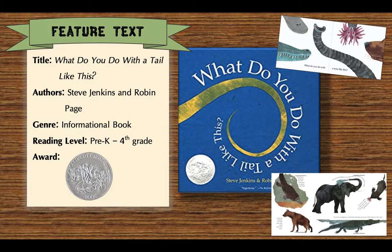What Do You Do With A Tale Like That is an informational text that can be used in pre-K through fourth grade. This story goes through the body parts of different animals that help them to survive. The book contains a wide variety of animals in which their noses, ears, tails, eyes, feet, and mouths are introduced as interesting and useful features for the animal. Some facts are well known, while others are facts that even the teacher might not know.